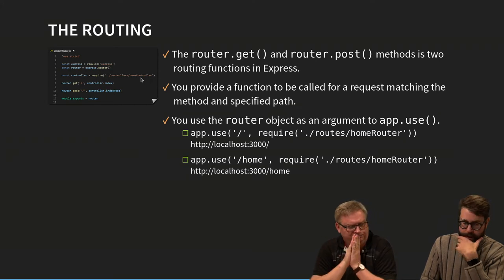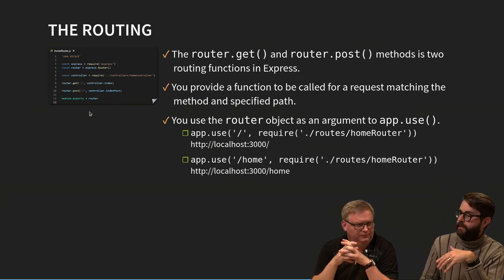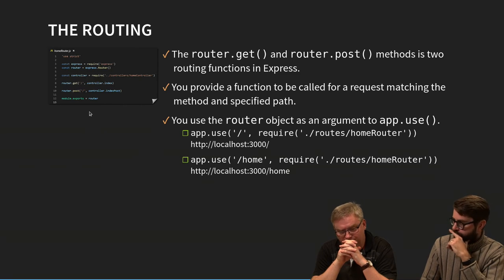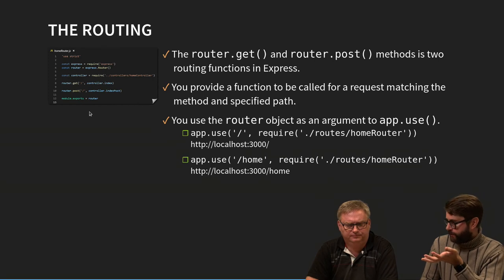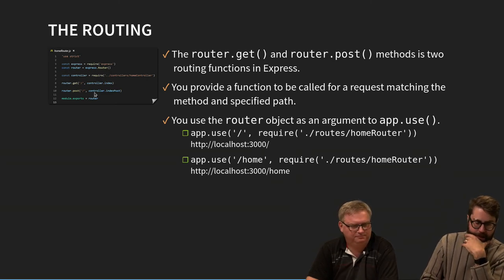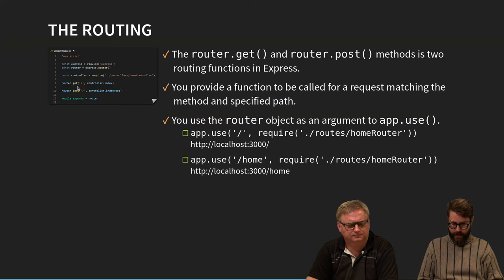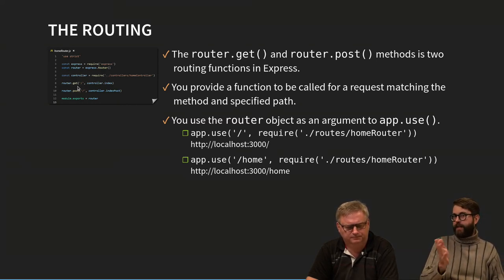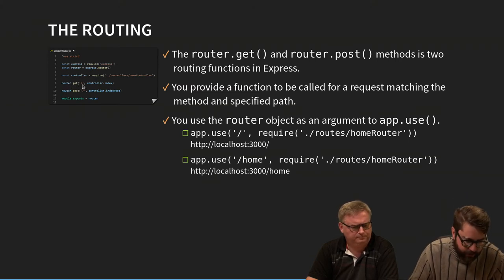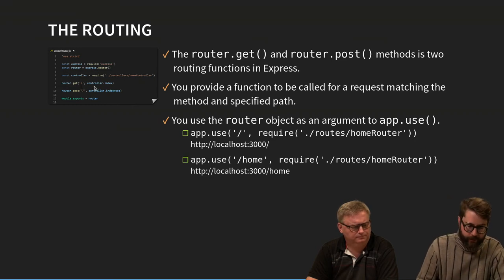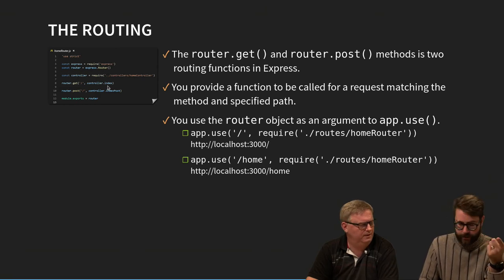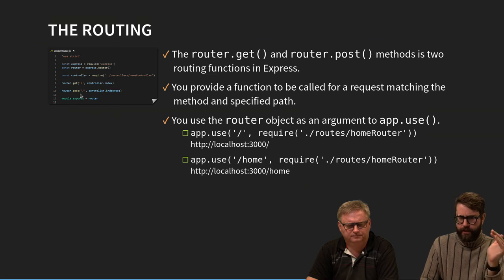It's quite common to write logic directly in the routes, but we refactored the code from routes into the controller for better structure. More files, but easier to maintain and test. Everything in the router file is relative to the route specified in app.js, so we don't need to repeat the base path. For example, a GET to the home route calls 'controller.index', and a POST calls 'controller.index.post'.